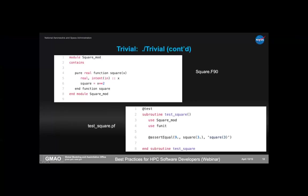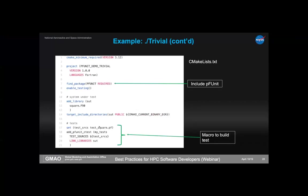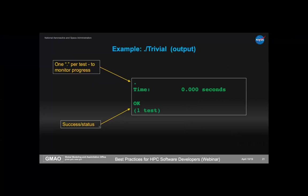The output for a passing test is very minimal. There's a dot indicating one test ran — a progress indicator useful when you have thousands of tests. It tells you how long the test took to run. You get a success status: 'OK' means it ran correctly. Then a summary: one test ran, none failed. If something failed, you'd get more information.